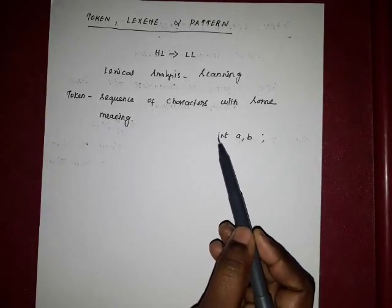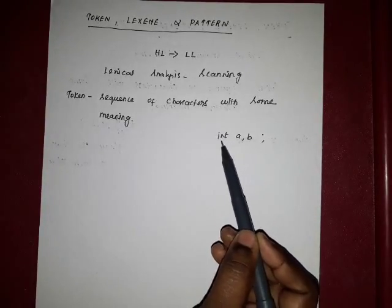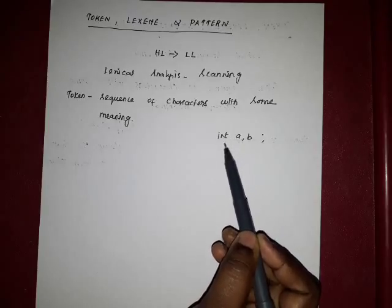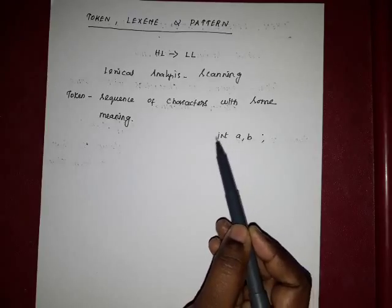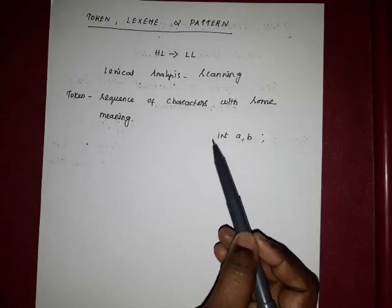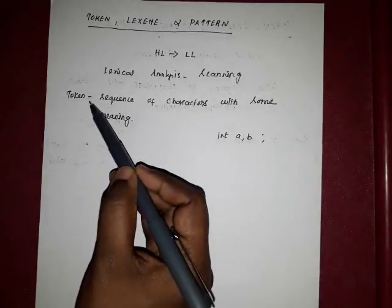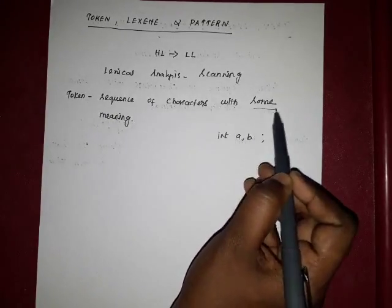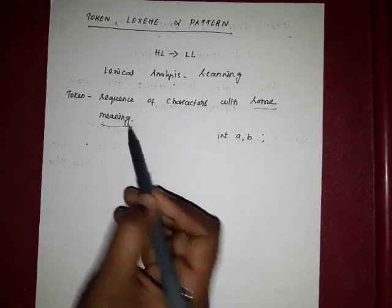First I read 'I', next 'N', next 'T', then there is a blank space. Before that, we group characters to identify the token — a sequence of characters grouped with some meaning.